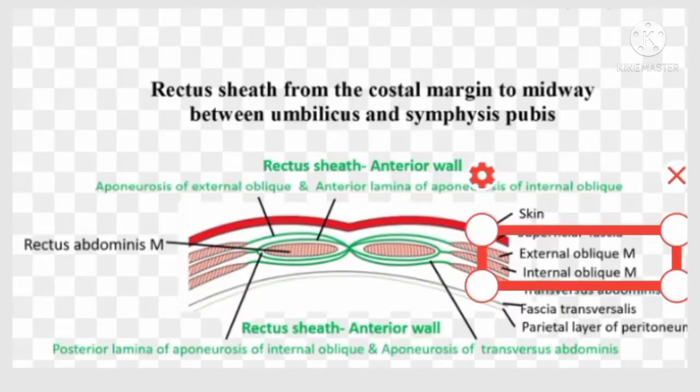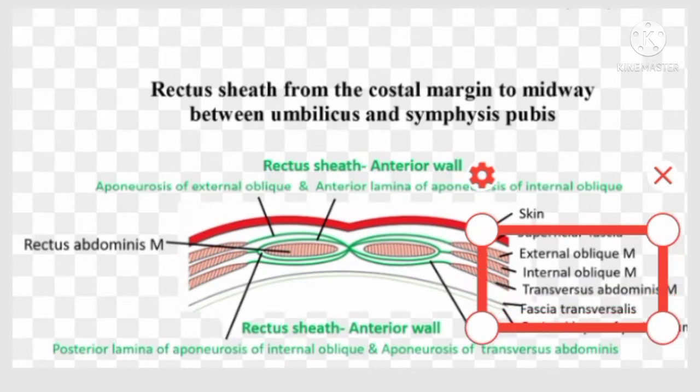The anterior wall of the rectus sheath between the costal margin and the arcuate line is formed by the external oblique aponeurosis and the anterior lamina of the aponeurosis of the internal oblique muscle, as you can see in the figure. The posterior wall between the costal margin and the arcuate line is formed by the posterior lamina of the aponeurosis of the internal oblique muscle and the aponeurosis of the transversus abdominis muscle.